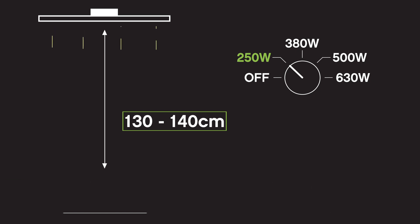When your plant is 20 centimeters tall, you should be aiming for a distance of 110 to 120 centimeters between your light and the plant, while still operating at 250 watts.